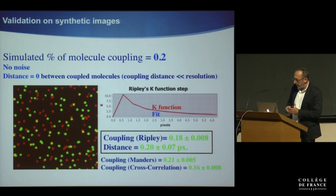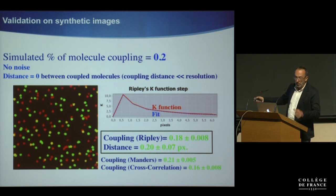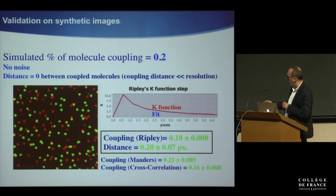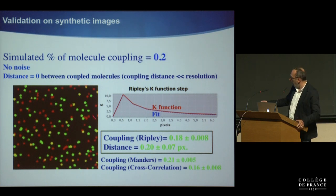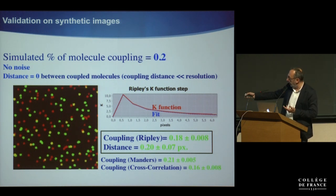We will now showcase this on synthetic data where we know the ground truth. We take two populations of points distributed in a field of view. By construction there is a coupling of 0.2, no noise, and distance 0 between the two distributions — meaning the coupling distance is much lower than the resolution. Using our technique, we find a coupling of 0.18 and a distance between the two populations of 0.2, which is close to 0 as expected from the simulation.